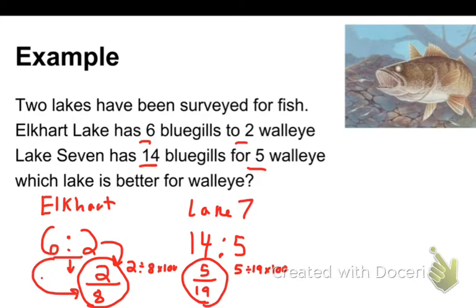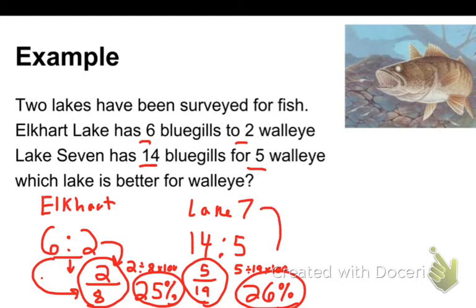So let's see what we get when we do that. When I do 2 divided by 8 times 100, I get exactly 25%. 25% of the fish that are caught are walleye. When I do 5 divided by 19, I get 0.26315789. Let's just round that to 0.26, which then becomes 26%. So by a very slim margin, Lake 7 is my winner.